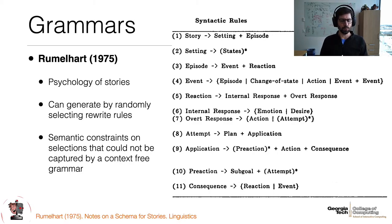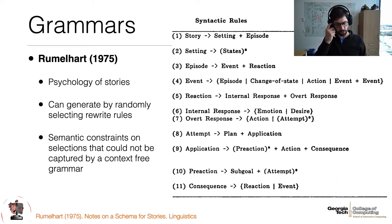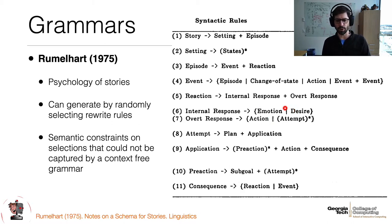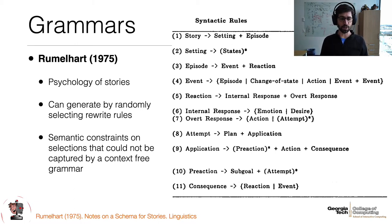Story generation as a scientific endeavor really got its roots in the 1970s, around 1975, when cognitive scientists started looking at stories. Rumelhart was one of the first to observe that stories have pattern — a somewhat hierarchical pattern. A story involves a setting and some episodes. The setting is a bunch of facts about the state of the world. Episodes are events followed by reactions. Events can be recursive, and reactions can involve an emotional response followed by an overt reaction.